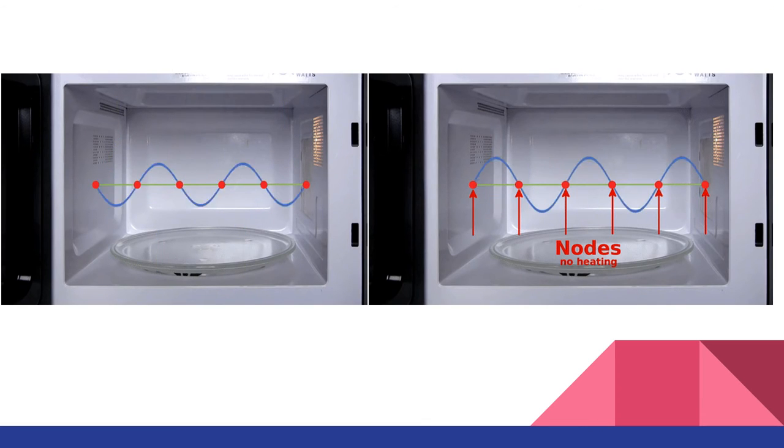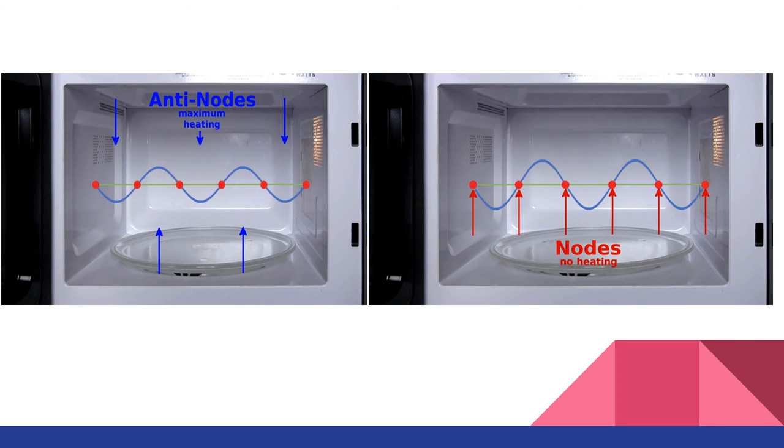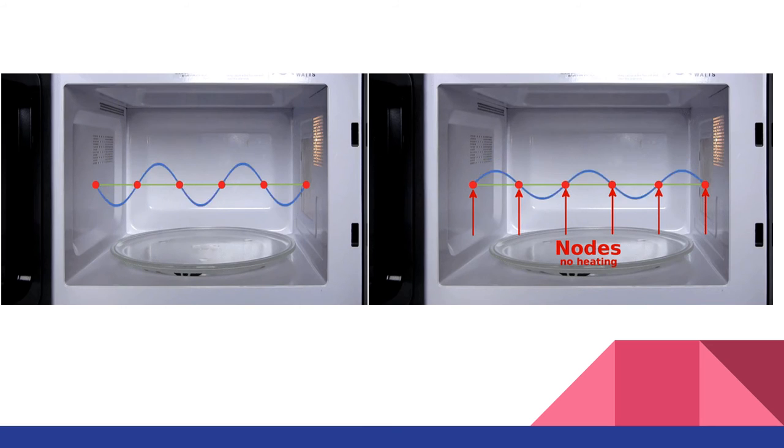To understand this, let us first understand something about standing waves. Three-dimensional behavior of a wave is difficult to predict, but the principle can be seen with the 2D structure of the wave. The first figure shows anti-nodes in the wave which have maximum energy and the second picture shows nodes which correspond to no energy regions in the wave. The portion of food at the node region does not get heated and the portion at anti-node gets heated maximum.